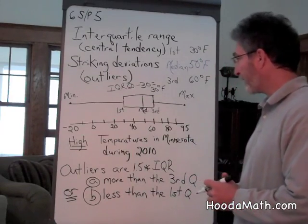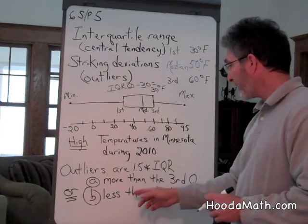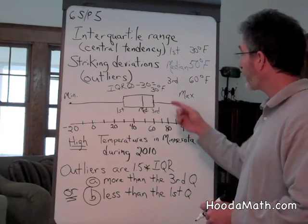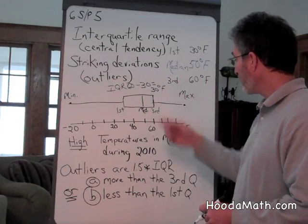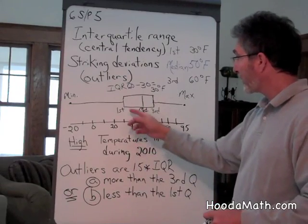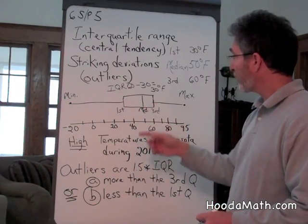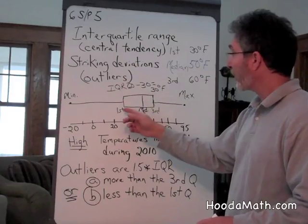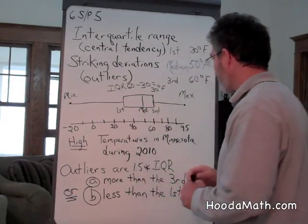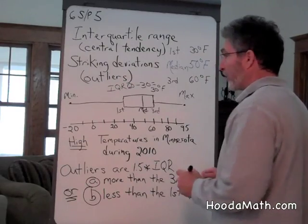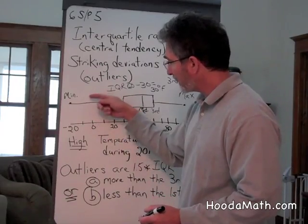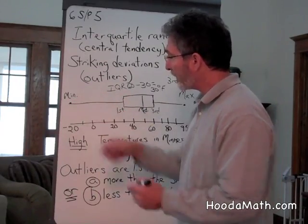Another way to find outliers is to take one and a half times 30, which is 45, and subtract it from the first quartile. The first quartile, once again, is 30. Take away 45, 30 take away 45 would be negative 15, which is about here. So we do have an outlier,